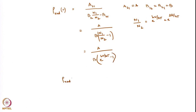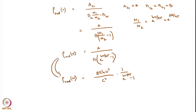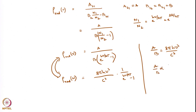Now, ρ_radiation(ν) in terms of Planck's black body radiation gives: 8πhν³/c³ · 1/[e^(hν/kT) − 1]. If I equate these two equations, I can get A/B = 8πhν³/c³. We also discussed that A/B is proportional to ν³.